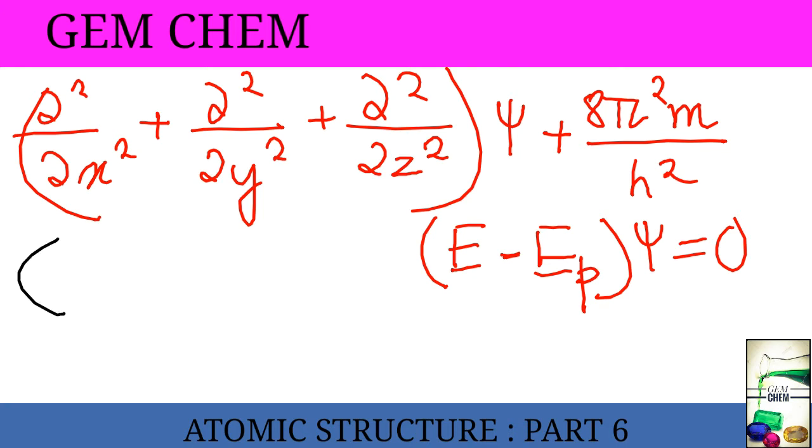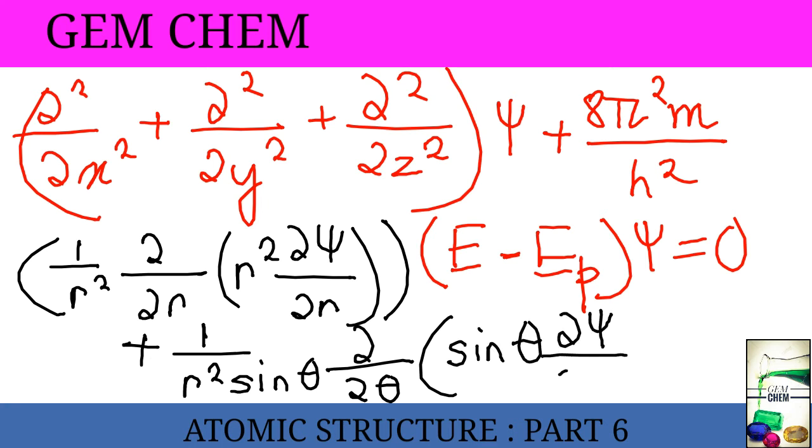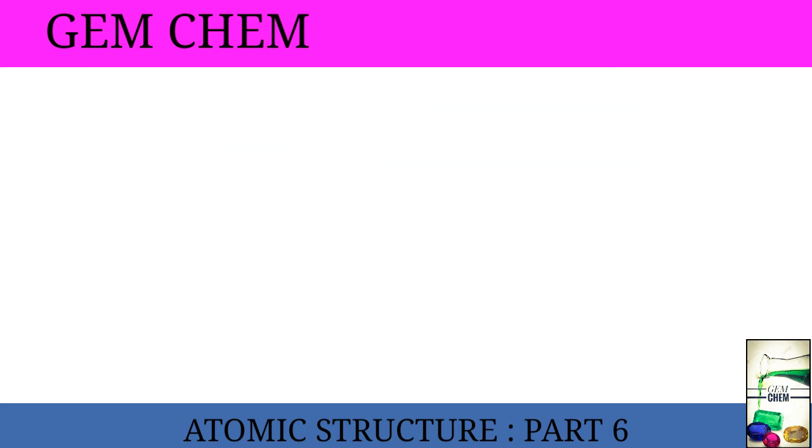Now we obtain first: (1/r²)(∂/∂r)(r² ∂Ψ/∂r). This is for the first expression. For the second expression we obtain: (1/r² sin θ)(∂/∂θ)(sin θ ∂Ψ/∂θ). This is for our second part. And for the third and fourth part we will see in the next part.